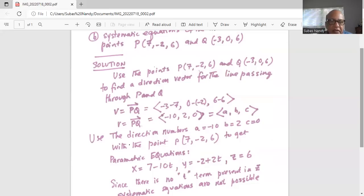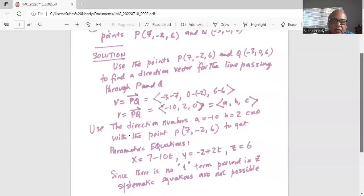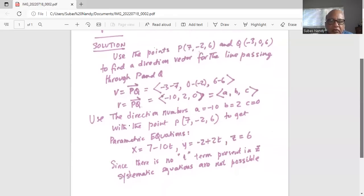Since there is no t term in z, systematic equations are not possible, because we cannot solve for t for z. We will be just left with the parametric equations. So I'll stop here today.